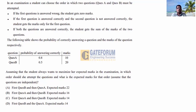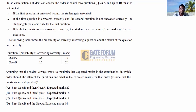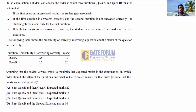The following table shows the probability of correctly answering each question and the marks: Question A has probability 0.8 and is worth 10 marks. Question B has probability 0.5 and is worth 20 marks. Assuming the student always wants to maximize their expected marks, in which order should she attempt the questions and what is the expected marks for that order? Assume the questions are independent.